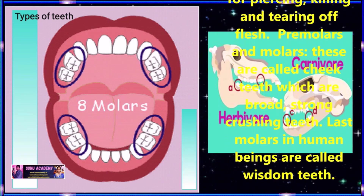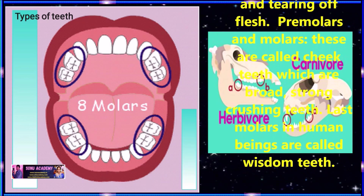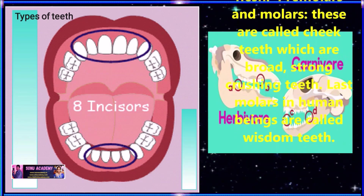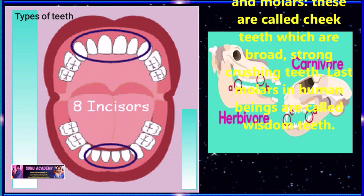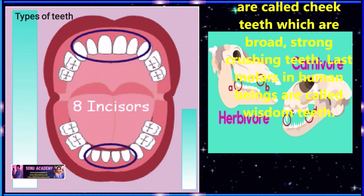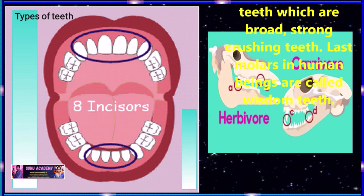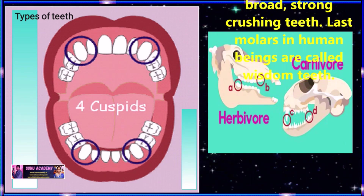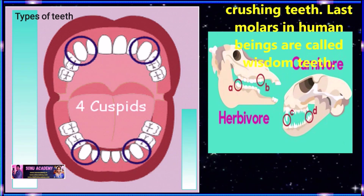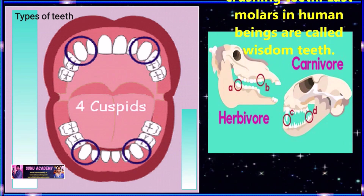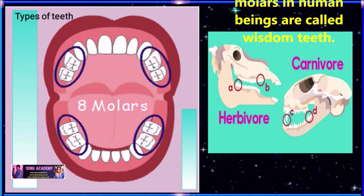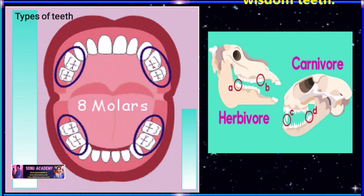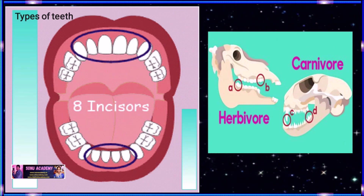Now let us discuss about premolars and molars. These are called cheek teeth, which are broad and strong for crushing the food. The last molars in humans are called wisdom teeth.